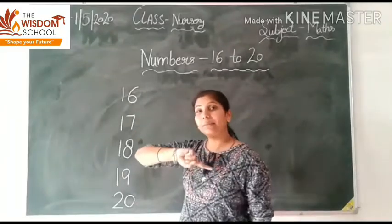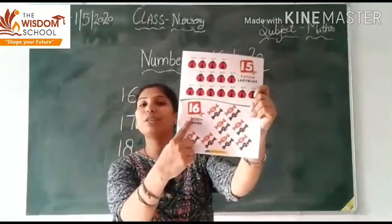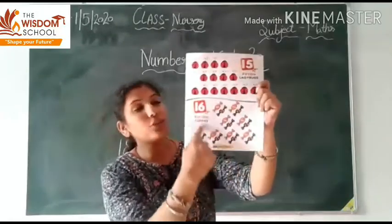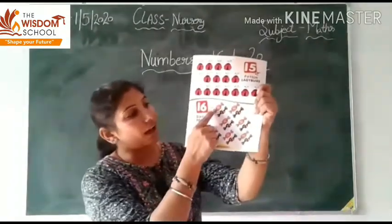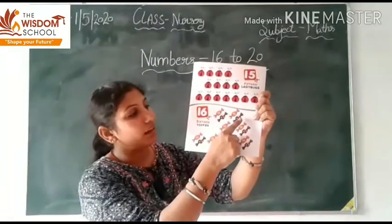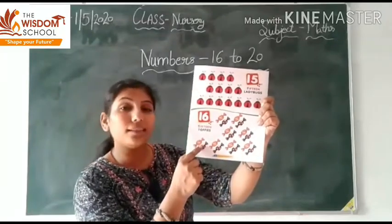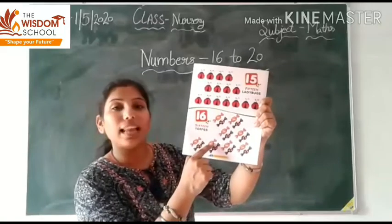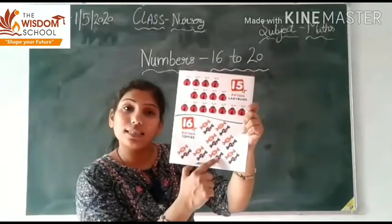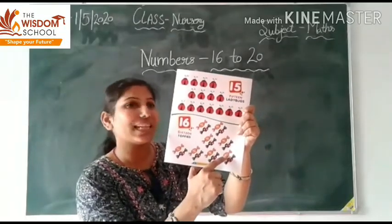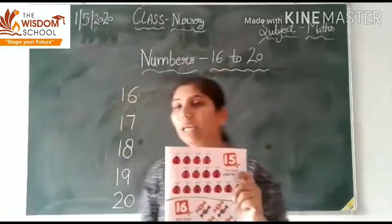So, 15 के बाद क्या आता है? 16. Okay, here is 16 — किसकी picture है? 1 6 — 16. And how many toffees are there? Toffees — हाँ, आप लोग खाते हैना toffees. Okay, let us count. 1 2 3 4 5 6 7 8 9 10 11 12 13.